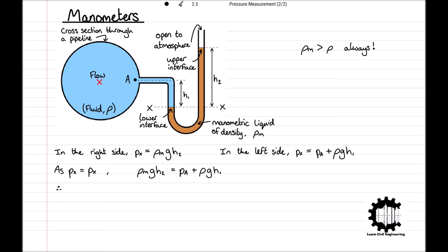And then rearranging for the pressure at point A, Pa is equal to g times by ρmh2 minus ρh1. Therefore, with the density of the flowing fluid and the manometric liquid already known, the pressure in the flowing fluid at point A can be determined by measuring the two heights, h1 and h2.